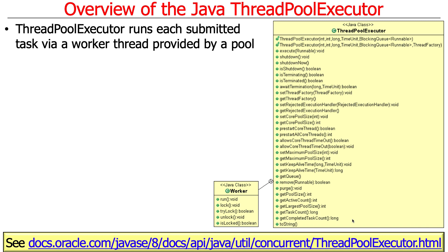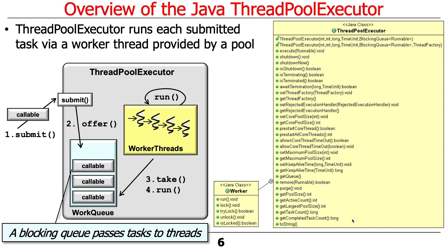There are other classes that also implement the executor service interface, but we're going to defer that largely until next semester. Typically, you have a thread pool executor instance with a pool of threads running inside of it. Client programs come along and submit callables, or less likely runnables, via the submit method. That then gets stuck into a work queue — a queue of tasks waiting to be run. When a thread is available, it will pull a request off the work queue and process it in the background.